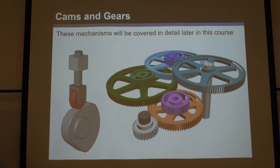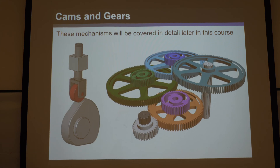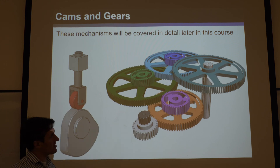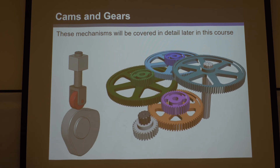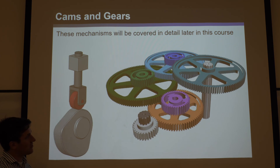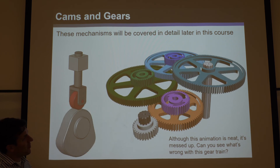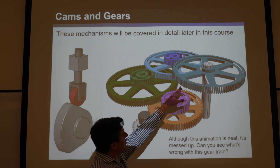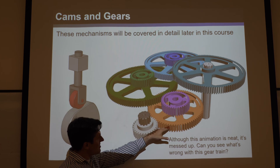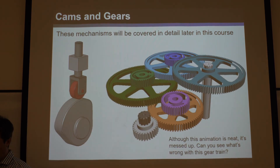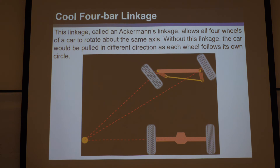Cams are easy to design but very useful — see the Writer's automation YouTube video recommended earlier. Gears, on the other hand, will take many lectures because they're non-trivial, extremely powerful, and used constantly. Almost every mechanical system uses gears and they've changed the world. Note: the animation shown has aliasing — each wheel appears to speed up and slow down incorrectly in the GIF.